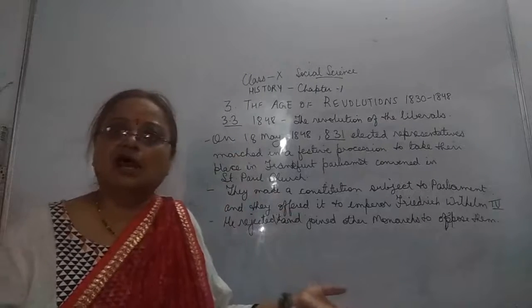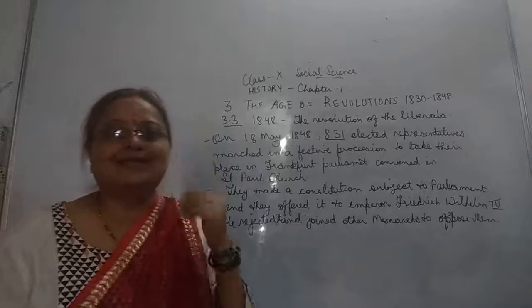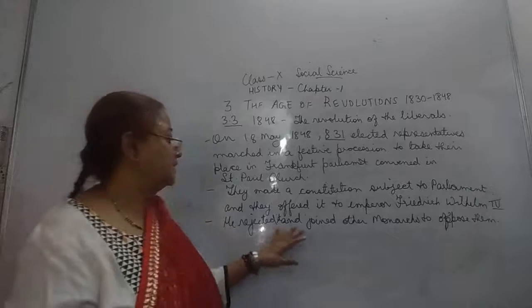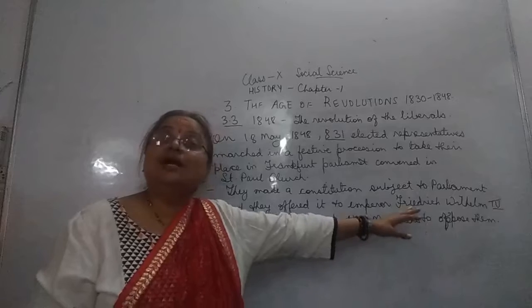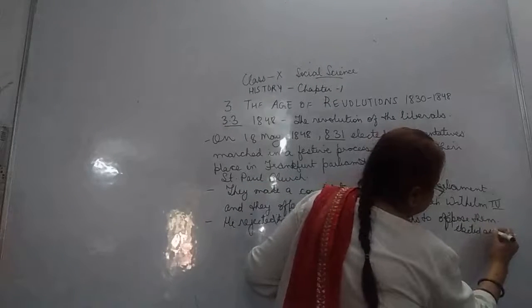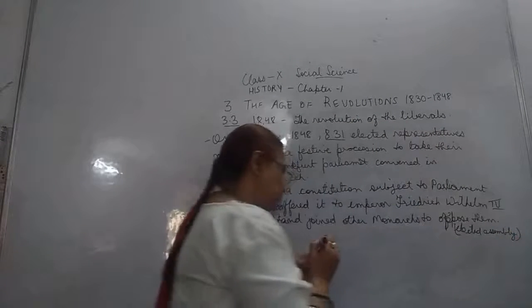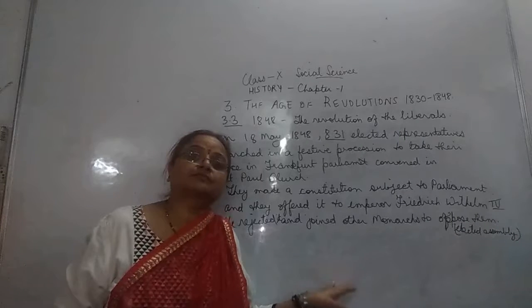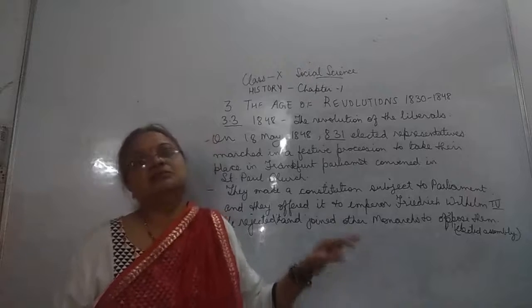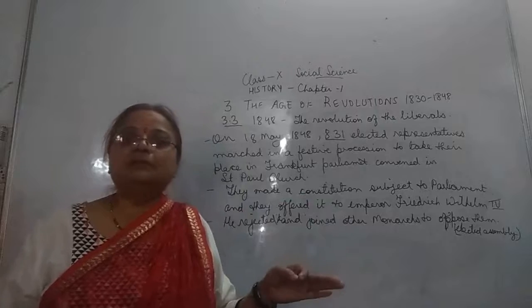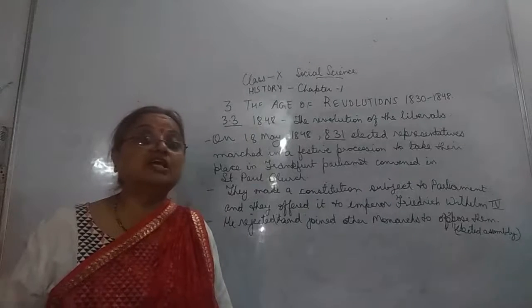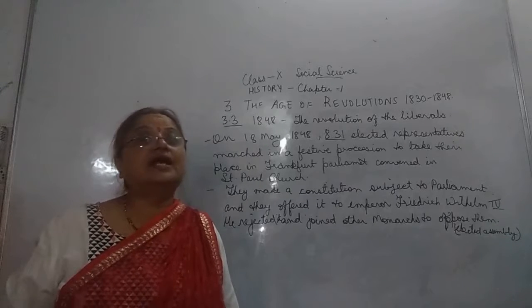The members there were the workers, the businessmen, the artisans. The upper middle class did not accept this — they said no, we are not accepting this anyhow. They were not ready to accept this at all. As a result, Frederick Wilhelm IV rejected it and joined the monarchs to oppose the elected assembly. The aristocracy and military became stronger, and the demands of the lower middle class eroded.